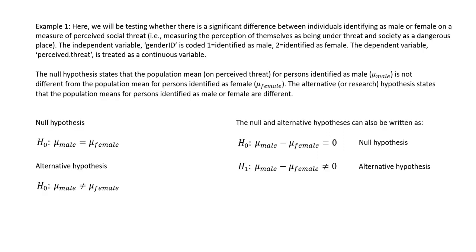Our analysis is going to be based on survey responses from 404 individuals. We're going to be testing whether there is a significant difference between individuals identifying as male or female on a measure of perceived social threat. The independent variable is gender identification, coded 1 for male and 2 for female, and the dependent variable is perceived threat.